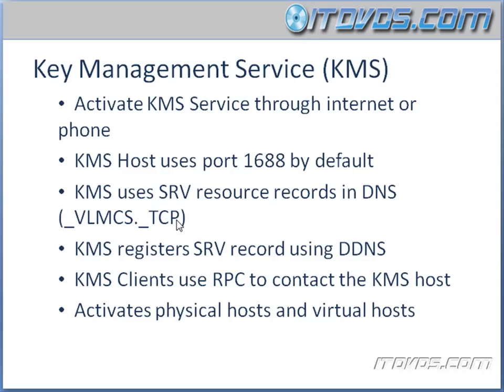If we have a volume licensing agreement and we're using Windows 7 volume license software, it's already configured by default to use a KMS server for activation. So we don't have to do anything — we just deploy our image and it's already going to look at DNS for your KMS server, find that particular record, talk to your KMS server, and get activated. KMS registers the SRV record using dynamic DNS.